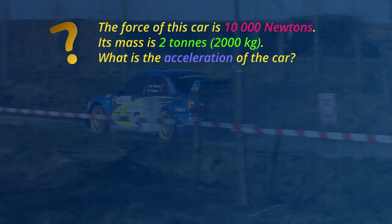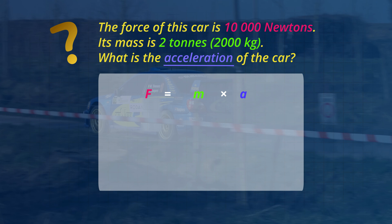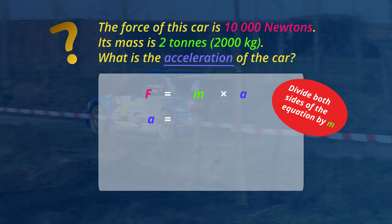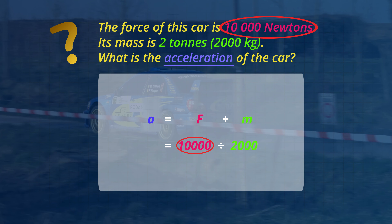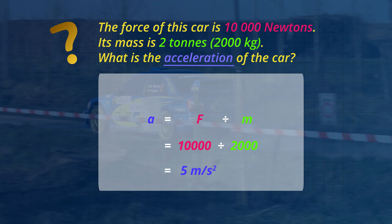The force of this car is 10,000 Newtons. Its mass is 2 tons or 2,000 kilograms. What is its acceleration? This time we rearrange the force rule to find the acceleration of the object. In the force rule, mass is multiplied by acceleration, but we want the acceleration by itself, so we divide both sides of the equation by the mass. The rule for acceleration equals force divided by mass. The force is 10,000 Newtons divided by the mass of 2,000 kilograms. So the acceleration of the car is 5 meters per second squared — it will speed up by 5 meters per second every second, or about 18 kilometers per hour every second.